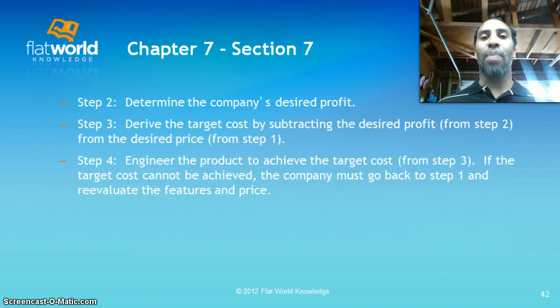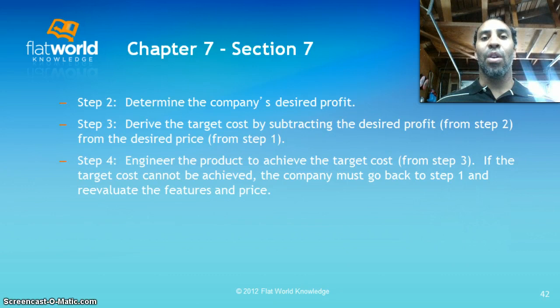Step two: determine the company's desired profit — this is how much you need to make on each widget produced, for example, $30 per widget. Step three: derive the target cost by subtracting the desired profit from the desired price. So you have your desired price from step one, your desired profit from step two, and now you know how much it's going to cost and how much you want to make.